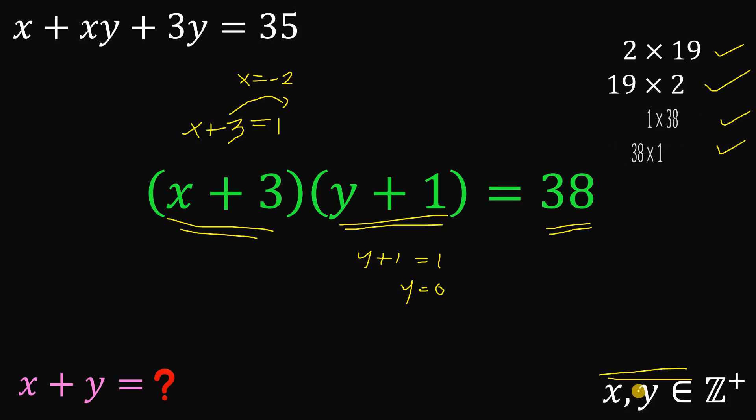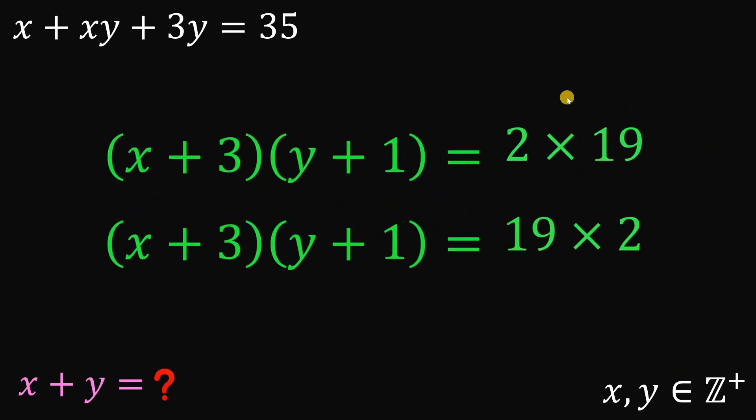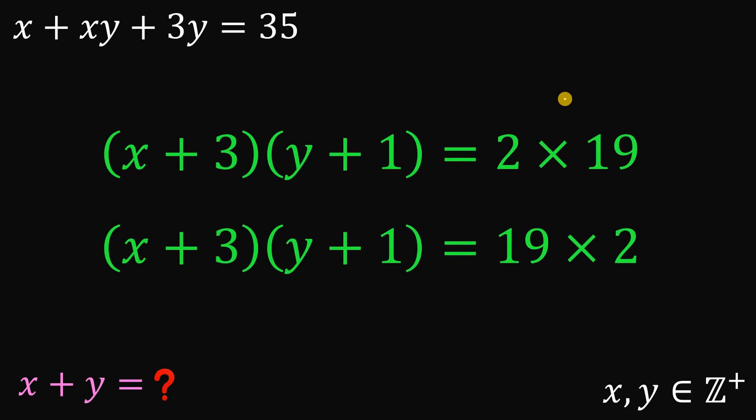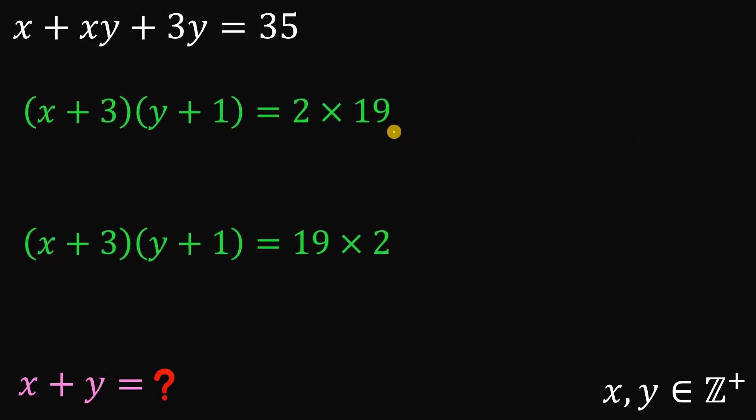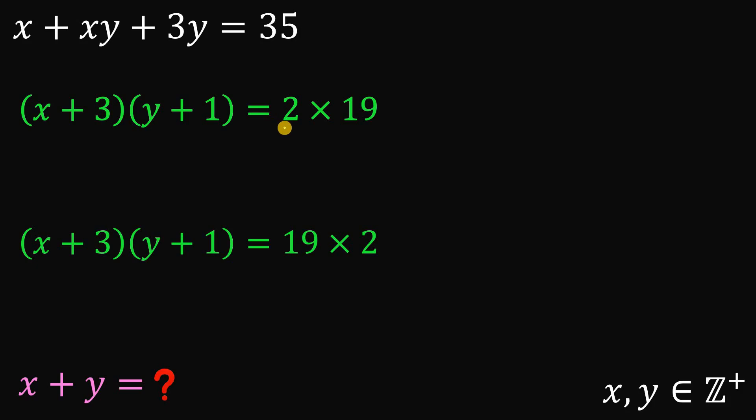So the only possible case is when the product of x plus 3 and y plus 1 equals 2 times 19 or 19 times 2. So we have two possible cases. In the first case, x plus 3 equals 2, then y plus 1 equals 19.